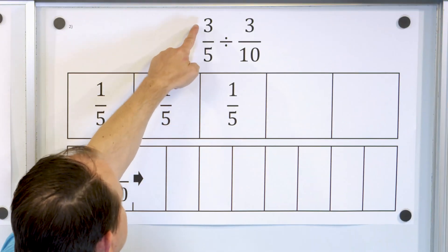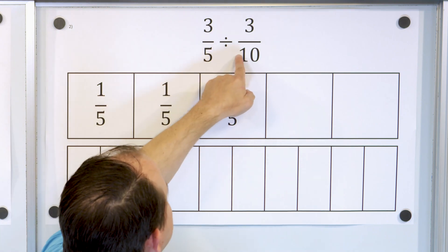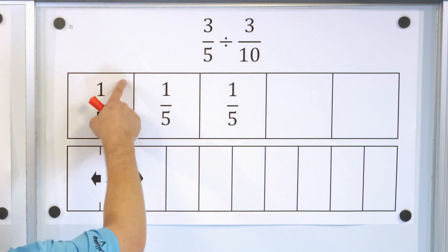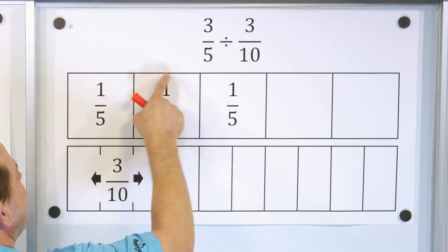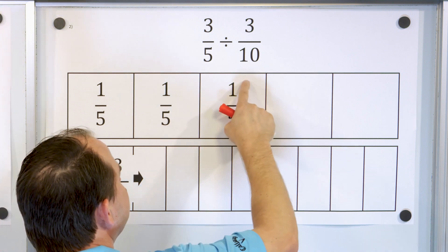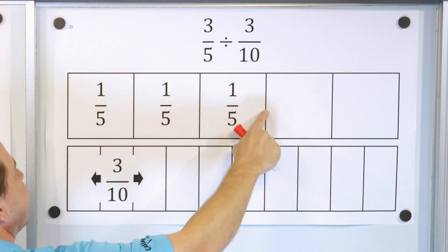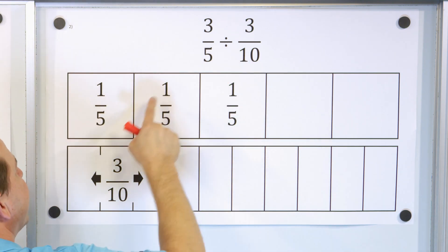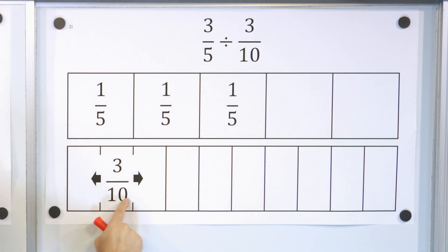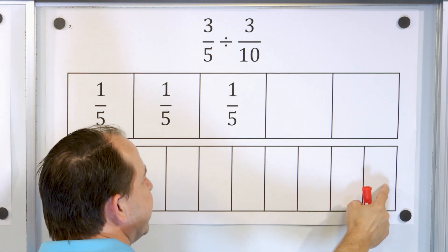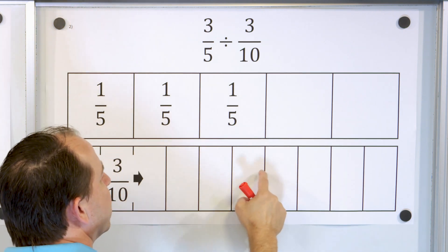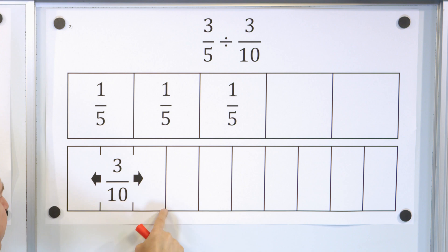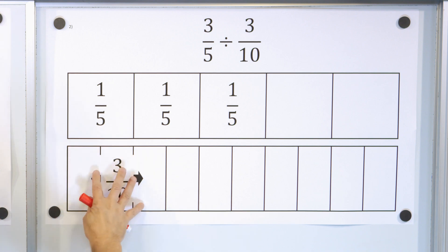Problem number two: let's take a look at three-fifths divided by three-tenths. So this is one-fifth, another one-fifth, and another one-fifth for a total of three-fifths on top, and then three-tenths on the bottom because I cut it into ten pieces and three of those tenths will be this portion.